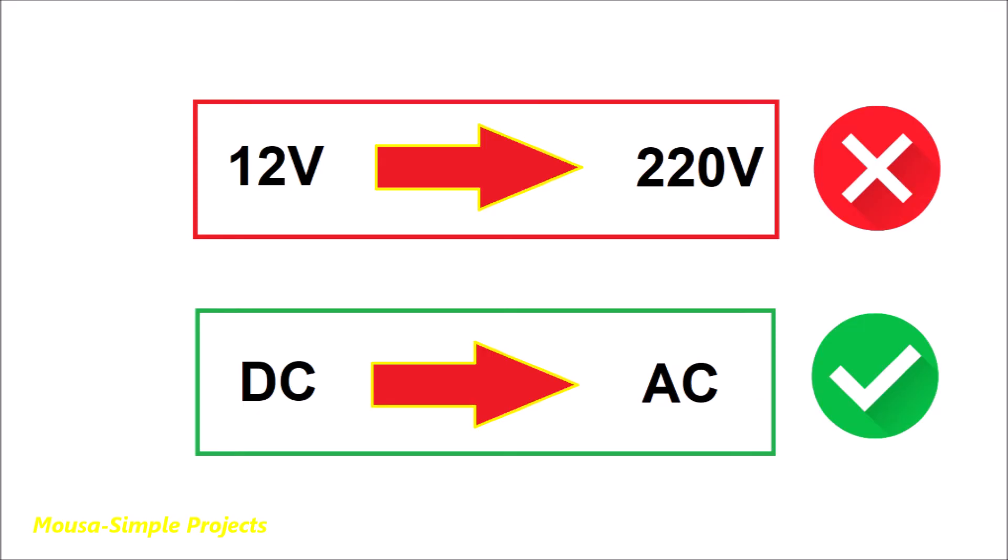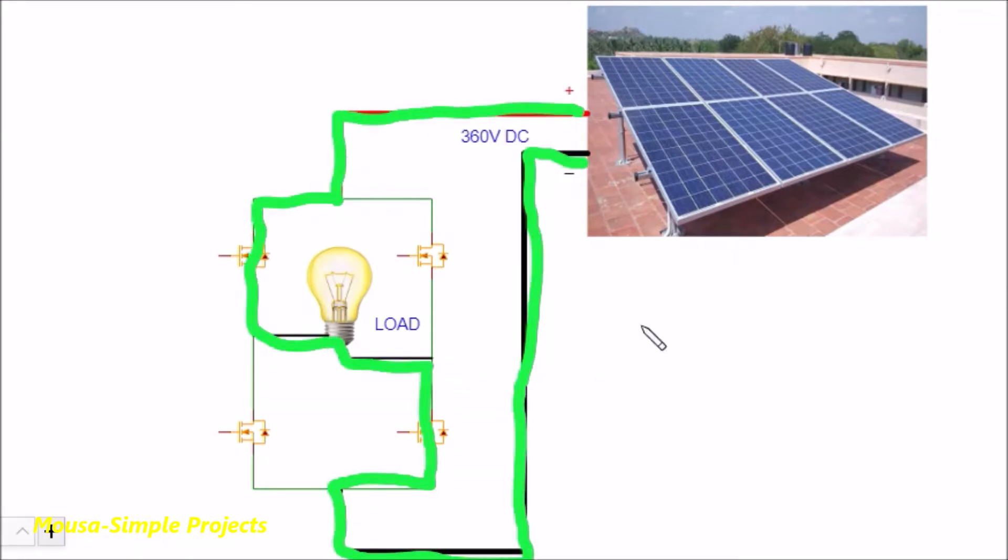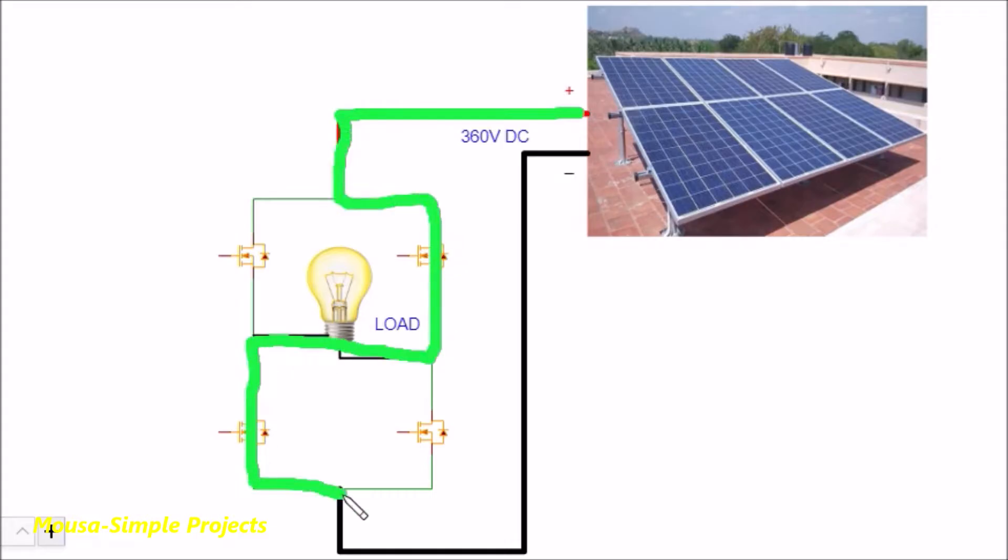The only process that we need here is converting the high DC voltage to AC voltage with pure sine wave. To do that, we have to use four N-channel MOSFETs and connect them together as shown here. Then we need a driver to switch on and off each two MOSFETs periodically.